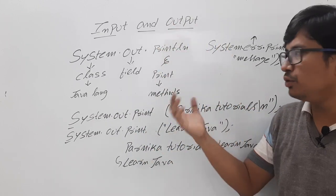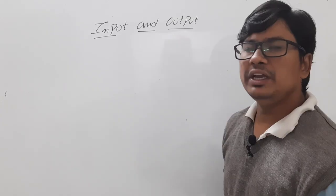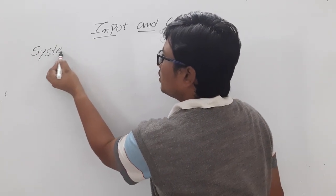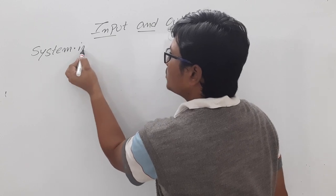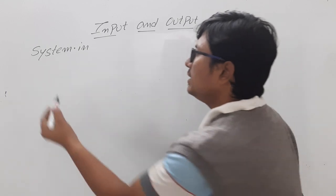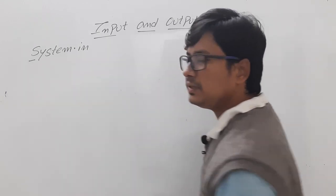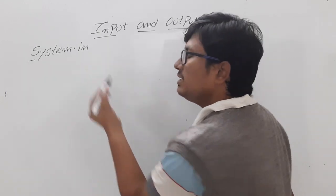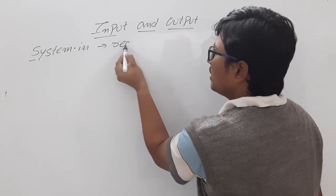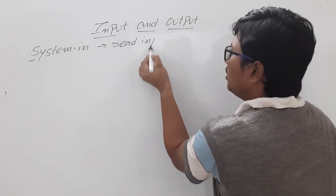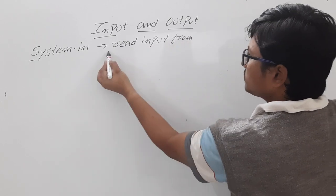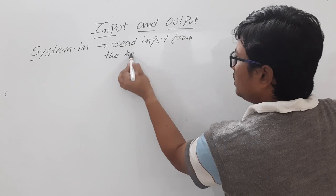To read input from the user we will use the in field. When displaying output we used the field called out in the System class. System is a class and in is a field, and this will be useful for you to read input from the keyboard.